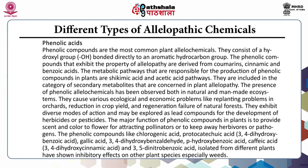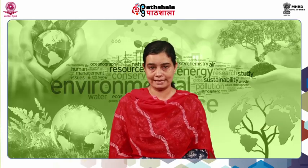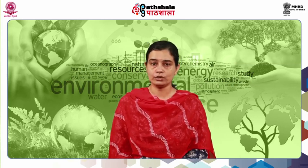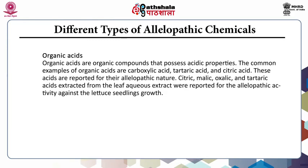The major function of phenolic compounds in plants is to provide scent and color to flowers for attracting pollinators or to keep away herbivores or pathogens. Phenolic compounds like chlorogenic acid, protocatechuic acid (3,4-dihydroxybenzoic acid), gallic acid, 3,4-dihydroxybenzaldehyde, para-hydroxybenzoic acid, caffeic acid and 3,5-dinitrobenzoic acid, isolated from different plants, have shown inhibitory effects on other plant species especially on weeds.